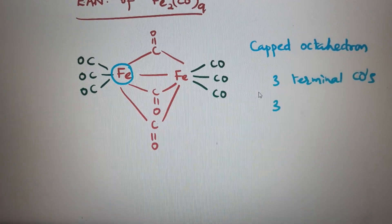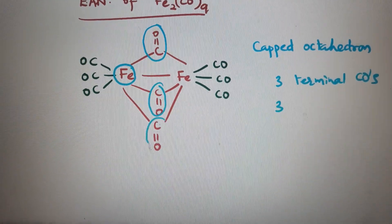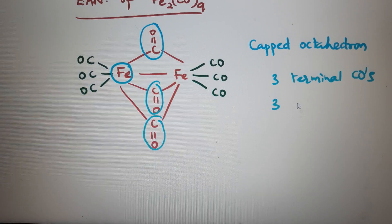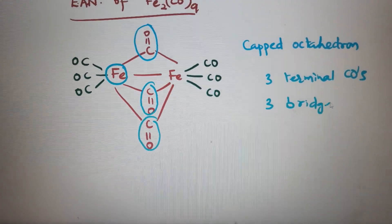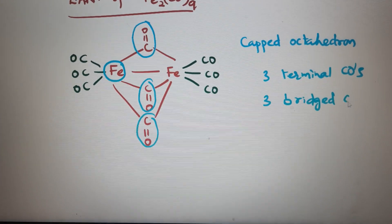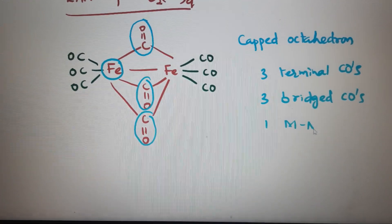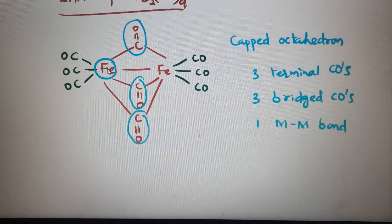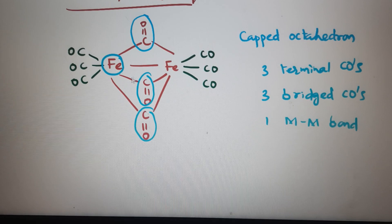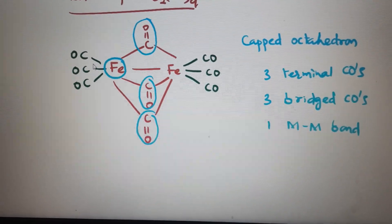Three bridged, these three are bridged ligands bridging between two irons and one metal-metal bond there. Around each iron same chemical environment there, each iron having same chemical environment.